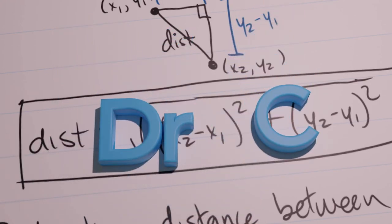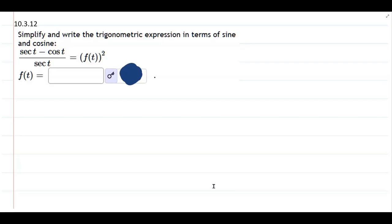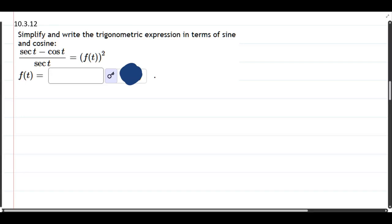We're going to simplify this secant minus cosine over secant and turn it into a single function or a function of just sine and or cosine, and that function will be squared. Let's go ahead and get started.